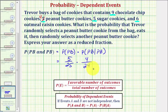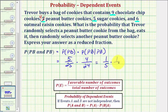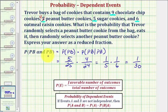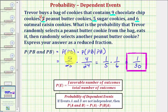Before finding the product, let's simplify. Five twenty-fifths simplifies to one-fifth, and four twenty-fourths simplifies to one-sixth. So one-fifth times one-sixth equals one-thirtieth. This is the probability of selecting a peanut butter cookie and then selecting another peanut butter cookie — theoretically, this would occur one time out of every thirty tries.